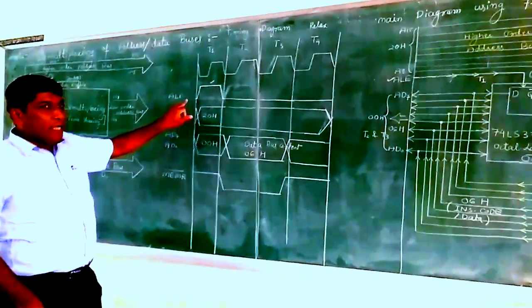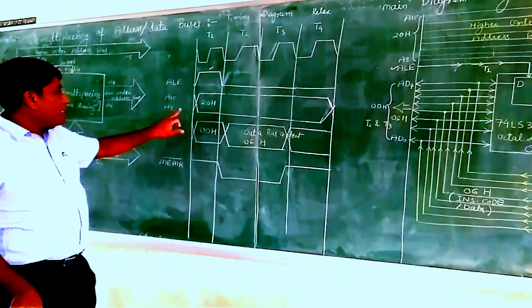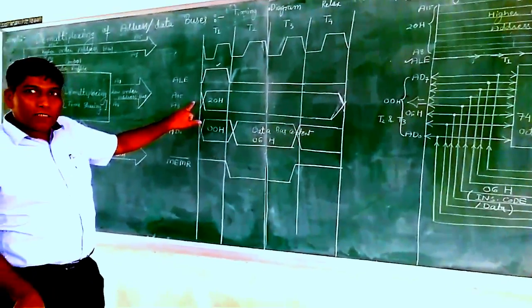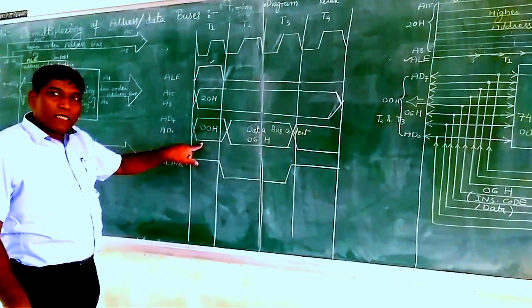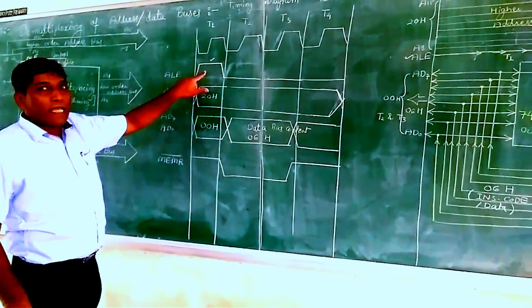initially at T1 timing, whenever the higher order address is loaded, it will be kept as it is. Then the lower order address will be kept for the T1 cycle.